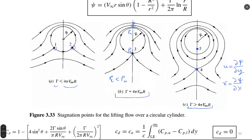For example, increasing cylinder rotation, we first have two stagnation points. Making the rotation bigger, we get one stagnation point at the bottom of the cylinder — the two stagnation points meet. When we increase rotation further, the stagnation point moves downward and an imaginary solution appears inside the cylinder. In the middle case, there are actually two solutions with the same coordinate.